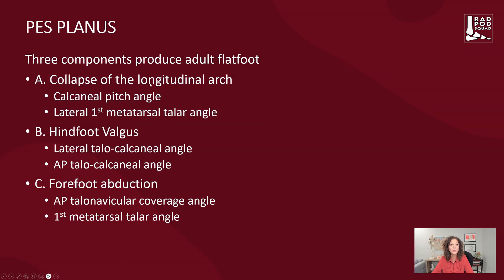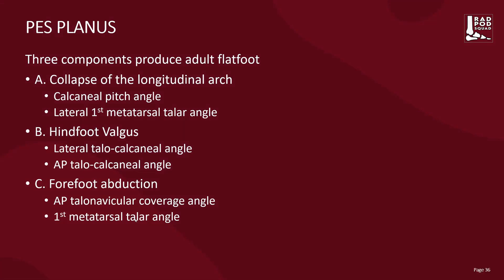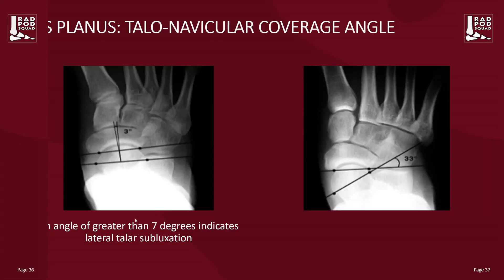The first is losing your longitudinal arch, which we can pick up through the calcaneal pitch angle and the lateral first metatarsal angle. Then we have hindfoot valgus, seen through the lateral talocalcaneal angle on the AP. And forefoot abduction can further be seen in the AP talonavicular coverage angle and the first metatarsal talar angle. Let's take a look.